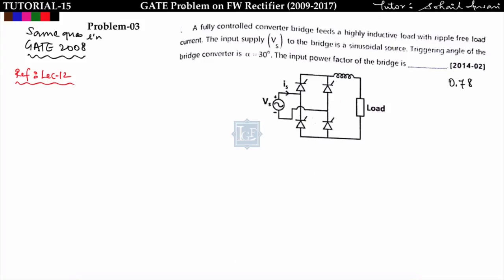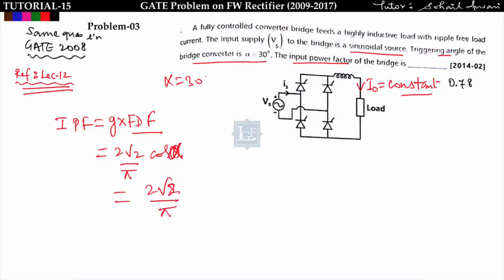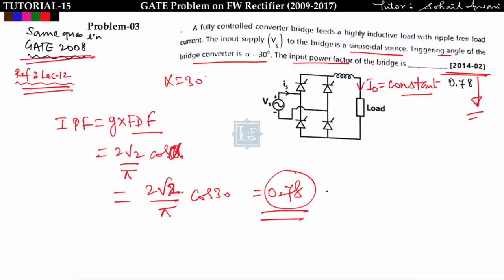The next problem: a fully controlled converter feeds a highly inductive load, meaning load current is constant. The triggering angle α = 30°. The input power factor equals the distortion factor G times the fundamental displacement factor. G = 2√2 / π, and the displacement factor = cos α = cos 30°, giving an input power factor of 0.78. This same question was asked in GATE 2008 and repeated in GATE 2014 Set 2.